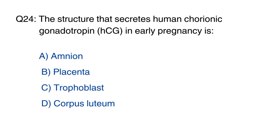Question 24: The structure that secretes human chorionic gonadotropin (HCG) in early pregnancy is? The right option is C, trophoblast.